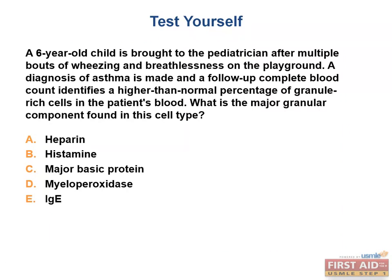Now let's test ourselves with a USMLE-style question. A 6-year-old child is brought to the pediatrician after multiple bouts of wheezing and breathlessness on the playground. A diagnosis of asthma is made, and a follow-up complete blood count identifies a higher-than-normal percentage of granulocyte-rich cells in the patient's blood. What is the major granular component found in this cell type? The answer choices are: heparin, histamine, major basic protein, myeloperoxidase, and IgE. The answer is C, major basic protein.